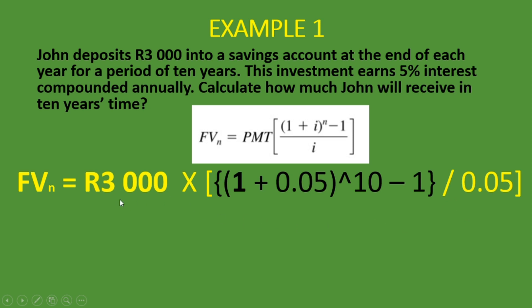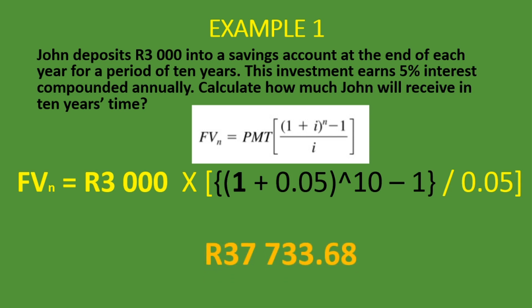And what is our future value of an ordinary annuity? The future value of an ordinary annuity is 37,733.68 rand. That is how you calculate the future value of an ordinary annuity when it is compounded annually.